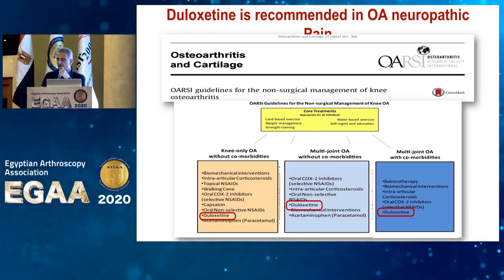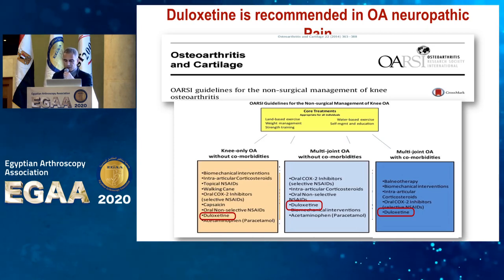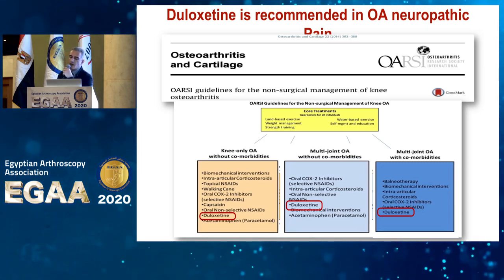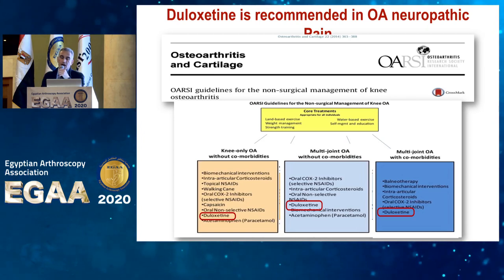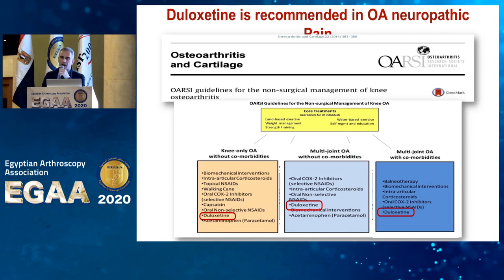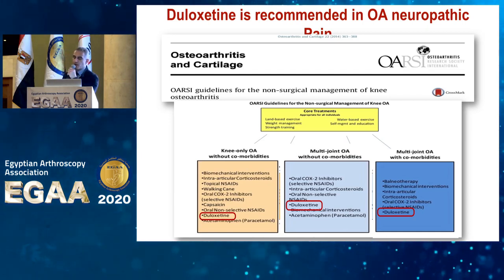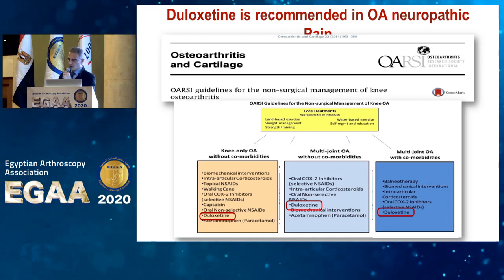When we look at the recommendation of the Osteoarthritis and Cartilage group, they have recommended the use of duloxetine in patients with knee osteoarthritis only. For multiple joint affection without comorbidities it can be used, and even in the presence of comorbidities duloxetine can still be used. So it is safe and recommended for this group of patients whether it is single or multiple joint affection, with or without other comorbidities.